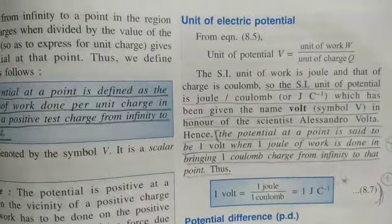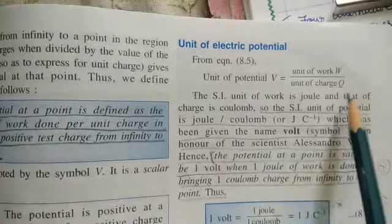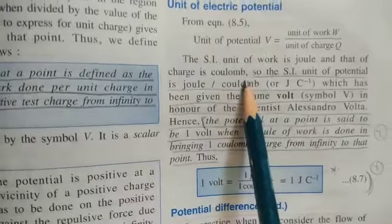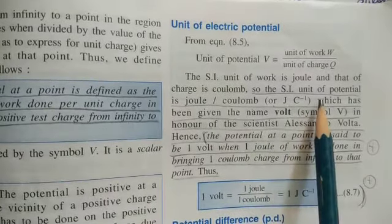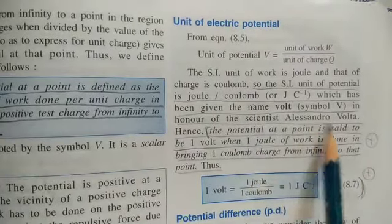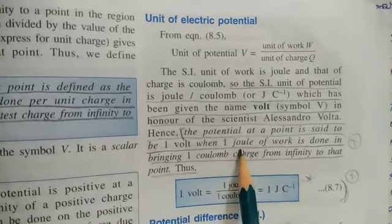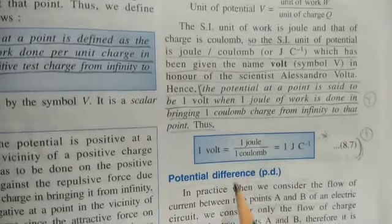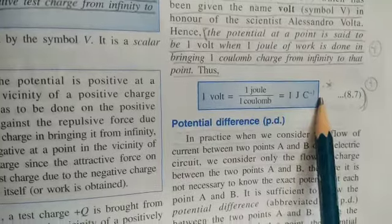The unit of electric potential: unit of V equals unit of work W divided by unit of charge Q. The SI unit of work is joule and that of charge is coulomb. So, the SI unit of potential is joule per coulomb or J·C to the power of minus 1, which has been given the name volt, symbol V, in honor of the scientist Alessandro Volta. Hence, the potential at a point is said to be 1 volt when 1 joule of work is done in bringing 1 coulomb charge from infinity to that point. Thus, 1 volt = 1 joule / 1 coulomb = 1 J·C⁻¹.